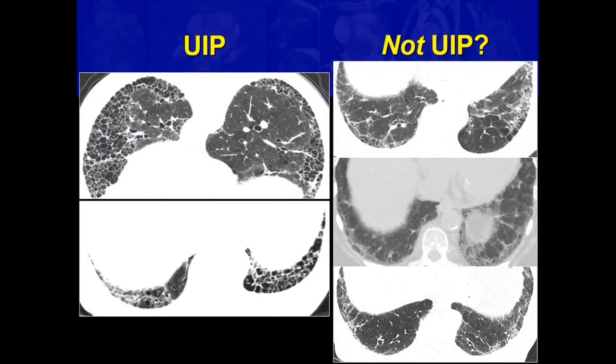With those diagnostic criteria, we can see this case here. This is a pretty clear-cut UIP — patchy basal subpleural reticulation, clear areas of honeycombing. If you use that definition, does it mean that these cases are not UIP? Maybe you could argue there's a little bit of honeycombing there, depending on how tightly you want to call things. I certainly don't see it here — I see a little bit of traction bronchiectasis and a little bit of traction bronchiectasis as well.